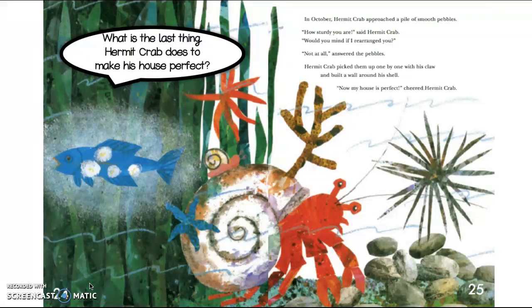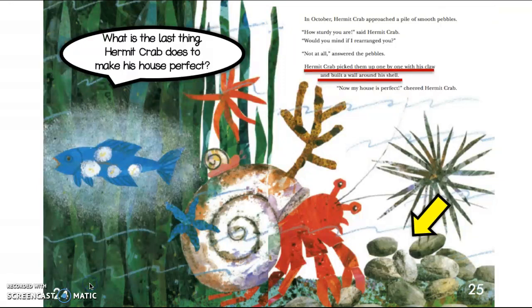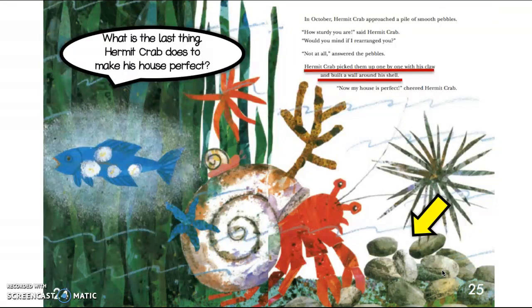What is the last thing Hermit Crab does to make his house perfect? He picked up the pebbles one by one and built a wall around his shell — that's what the text says. Can you look at the illustrations and find the wall of pebbles in the picture and point to it with your good finger? There it is right there. You can see in the illustration how he's building up that wall, picking them up one by one to make it nice and tall. That really shows me as the reader what the author was talking about. Do you know what a pebble is? If you didn't know, you could look at the picture. The picture tells us it's like a little small rock — that's another reason why the picture is so helpful for the reader.